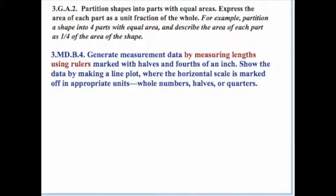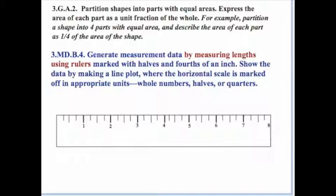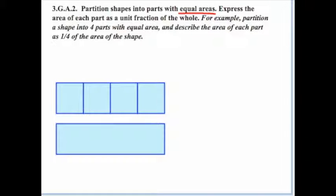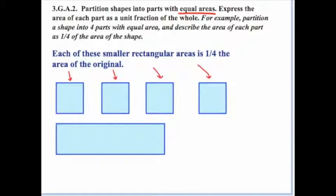At the same grade level, there's standard 3.MD.B.4, which talks about measuring lengths using rulers marked with halves and fourths of an inch. You may have to create your own rulers. This standard ties in because students can create rectangles and measure the lengths needed. For example, they could create a rectangle that's four inches long, then mark off and figure out exactly how to divide it into four equal parts. Each of those smaller rectangular areas would be one-fourth the area of the original.